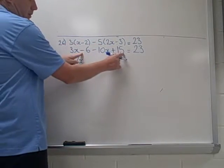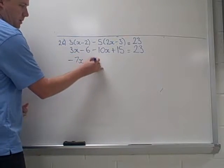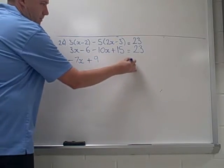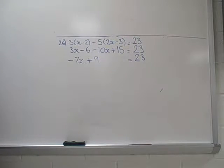Negative 6 plus 15, that's going to give us positive 9, equals 23.